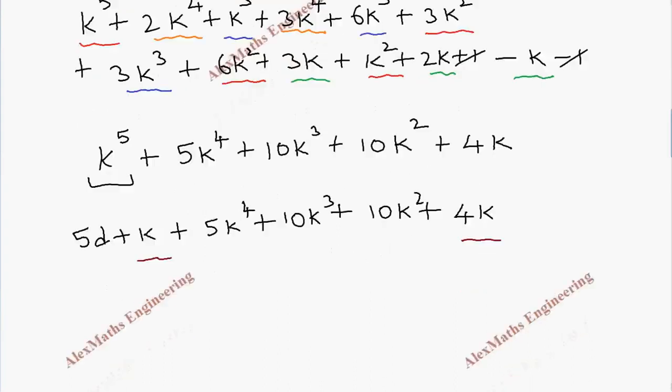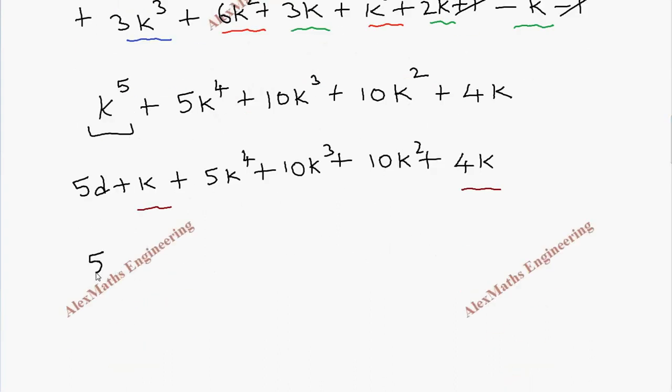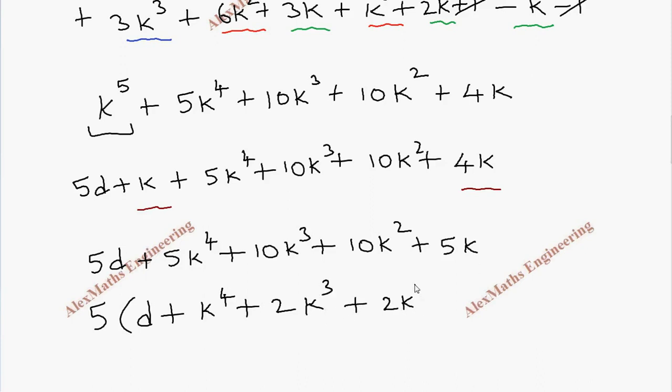Now rearranging this we have 5d, then 5k^4 plus 10k^3 plus 10k^2, then adding this we get plus 5k. So totally we can take 5 common, that gives 5 times (d plus k^4 plus 2k^3 plus 2k^2 plus k).